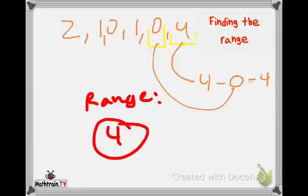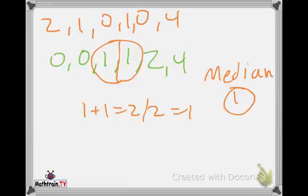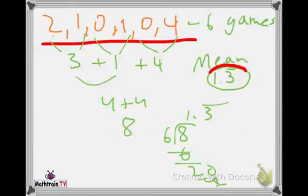So let's summarize the description of the number of goals per game Lionel Messi scored in his last six games. In each of the last six games, he scored the following: two, one, zero, one, zero, four. So let's go back to the mean. It shows right over here where the mean is, one point three repeating. That's the mean.